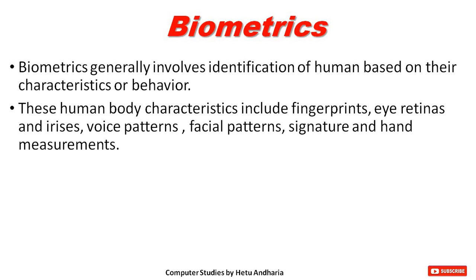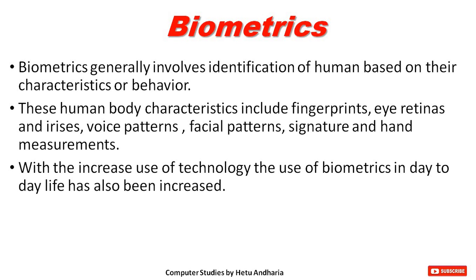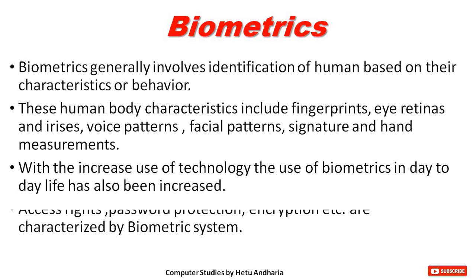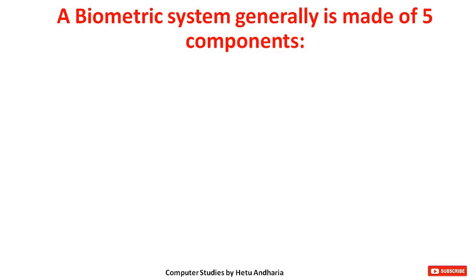With the increased use of technology, the use of biometrics in day-to-day life has increased a lot. Access rights, password protection, and encryption are characteristics of biometrics. The easiest example of biometrics which you may all be using is the fingerprint lock in your smartphone, or face lock in your smartphone. Now a biometric system is generally made up of five components.